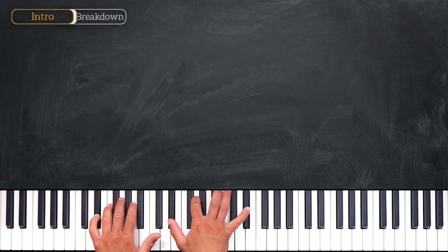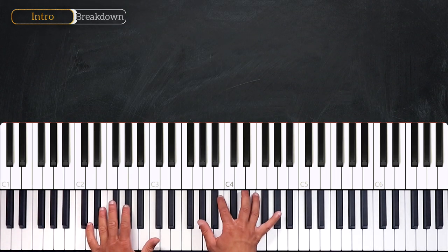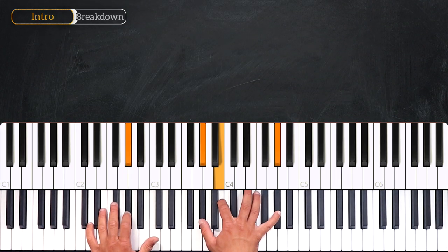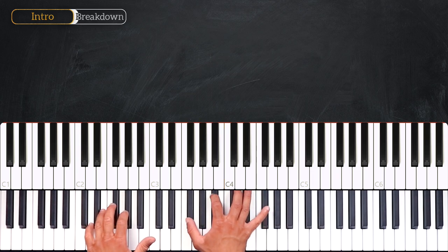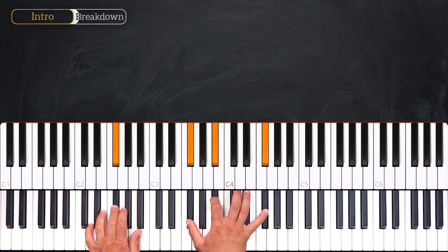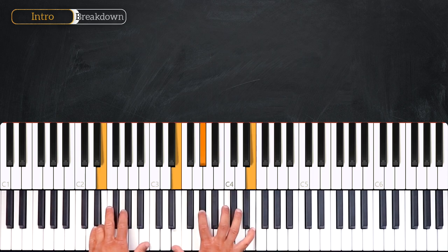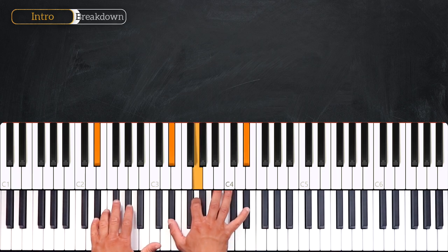Alright, so let's quickly recap all the chords. We start on G-sharp minor, then we play F-sharp, into E-major, and we finish on D-sharp major. Good job.